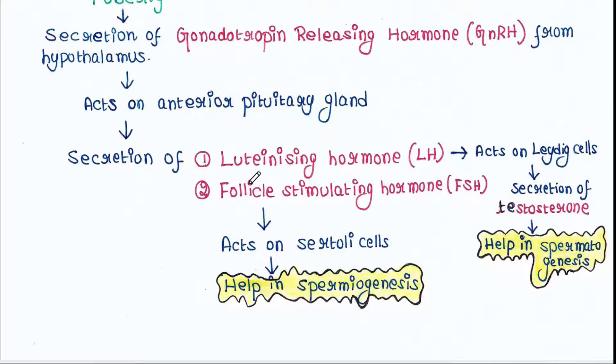One is LH or luteinizing hormone, and the other one is follicle stimulating hormone or FSH. LH acts on Leydig cells, and Leydig cells secrete testosterone. Testosterone helps in spermatogenesis. The other hormone FSH acts on Sertoli cells. Sertoli cells help in spermiogenesis.